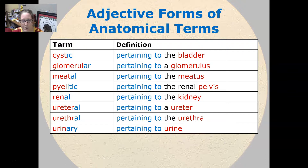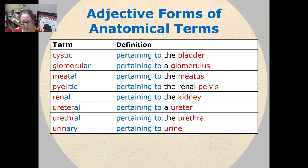And a few adjective forms for the anatomical terms: cystic means pertaining to the bladder. Glomerular pertaining to a glomerulus. Meatal pertaining to the meatus. Pyelitic pertaining to the renal pelvis. Renal pertaining to the kidney. Ureteral pertaining to the ureter and urethral pertaining to the urethra. Urinary is pertaining to urine.